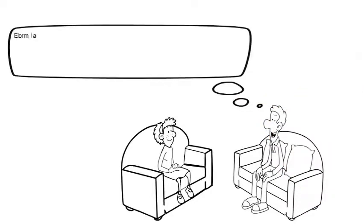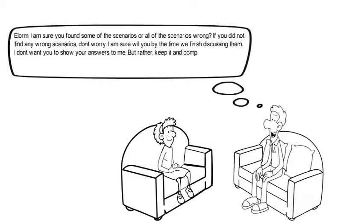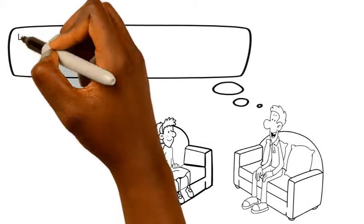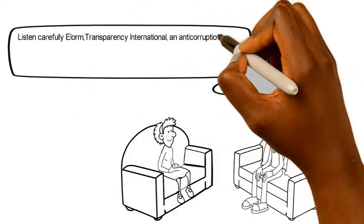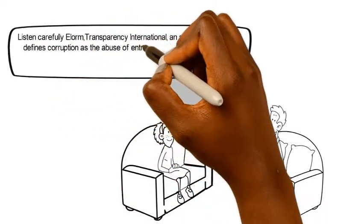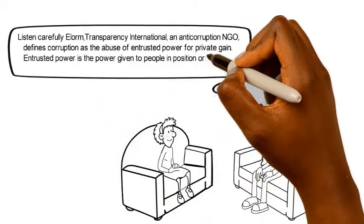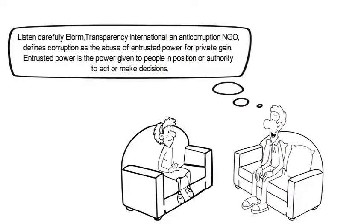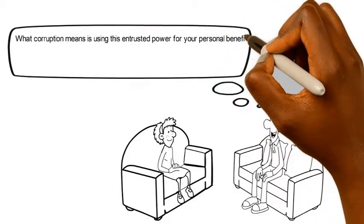I'm sure you found some or all of the scenarios wrong. If you did not find any wrong scenarios, don't worry — I am sure you will by the time we finish discussing them. Transparency International, an anti-corruption NGO, defines corruption as the abuse of entrusted power for private gain. Entrusted power is the power given to people in a position of authority to act or make decisions. Corruption means using that entrusted power for your personal benefit and not for the purpose for which the power was given.